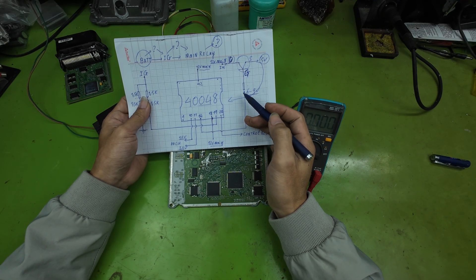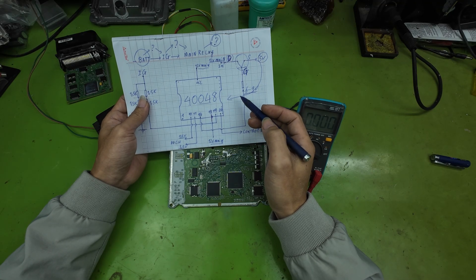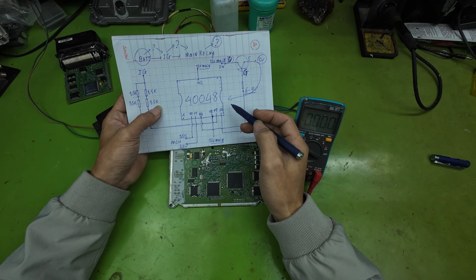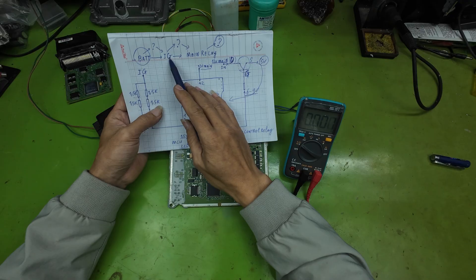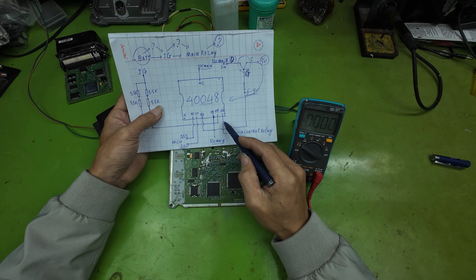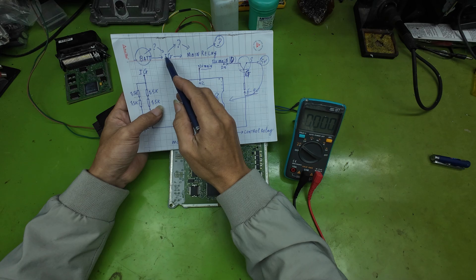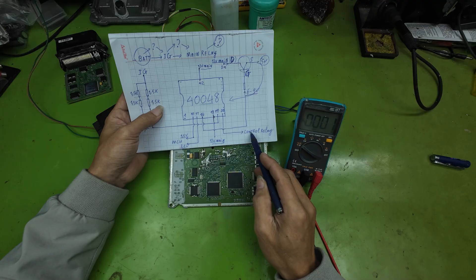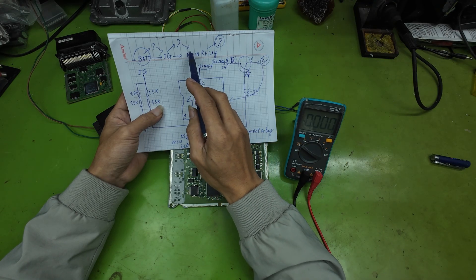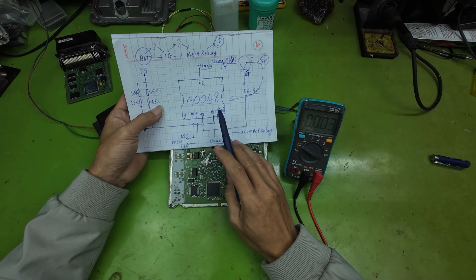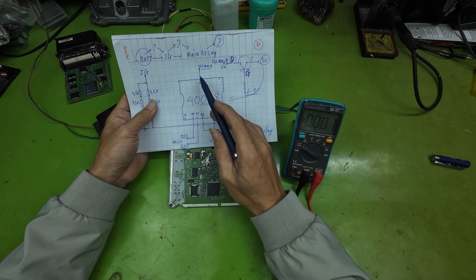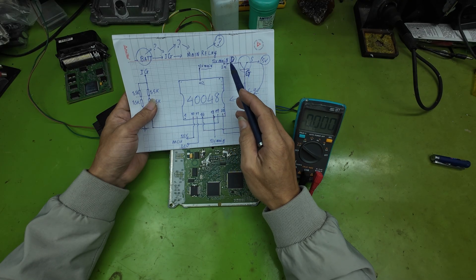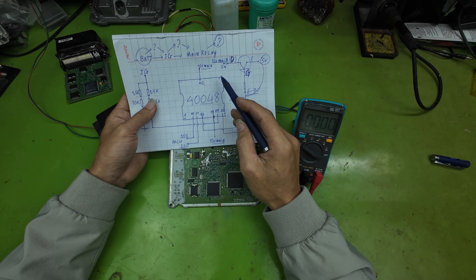Based on the analysis sequence above, you can visualize where we should start our diagnostic measurements. First, when the IG power supply is applied to pin 19 of the IC40048, this IC begins operating and sends the command signal to activate the main relay. As we checked earlier, when we supplied power, the main relay engaged. This indicates that the 12-volt IG power at pin 19 of the IC is present. The IC is functioning, and it has output the ground control signal for the main relay, causing it to turn on. However, the relay does not latch, which means the ECU is still not operating. This tells us that there is an issue somewhere in the circuit.